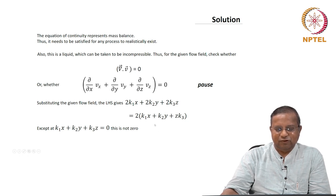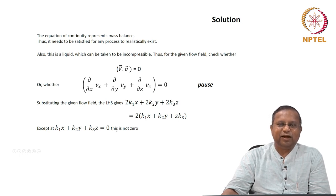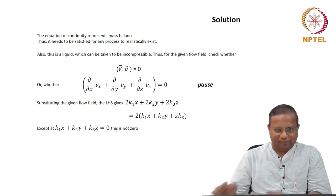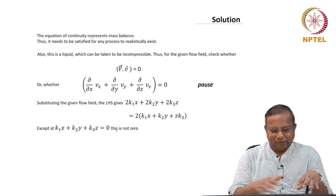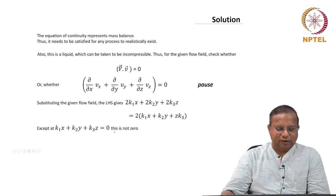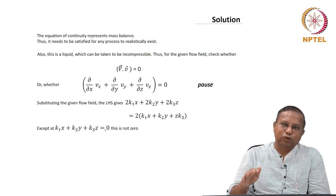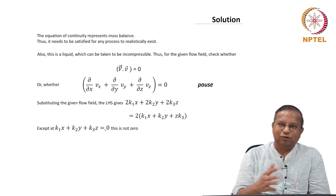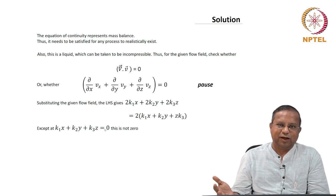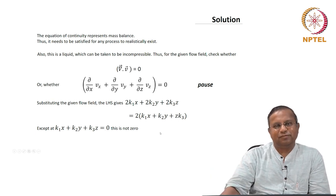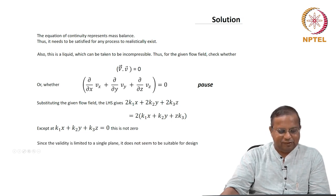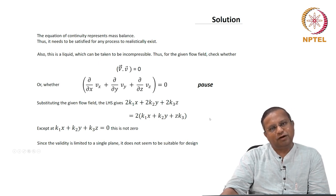As you can see, 2(k1·x + k2·y + k3·z) = 0 is satisfied only at very specialized spaces. In other words, k1·x + k2·y + k3·z = 0 is the equation of a plane. So on that plane alone the device is valid — in no other region is the device going to be valid. Therefore, it is not a very good design for practical reasons. Since the validity is limited to a single plane, it does not seem suitable for design.